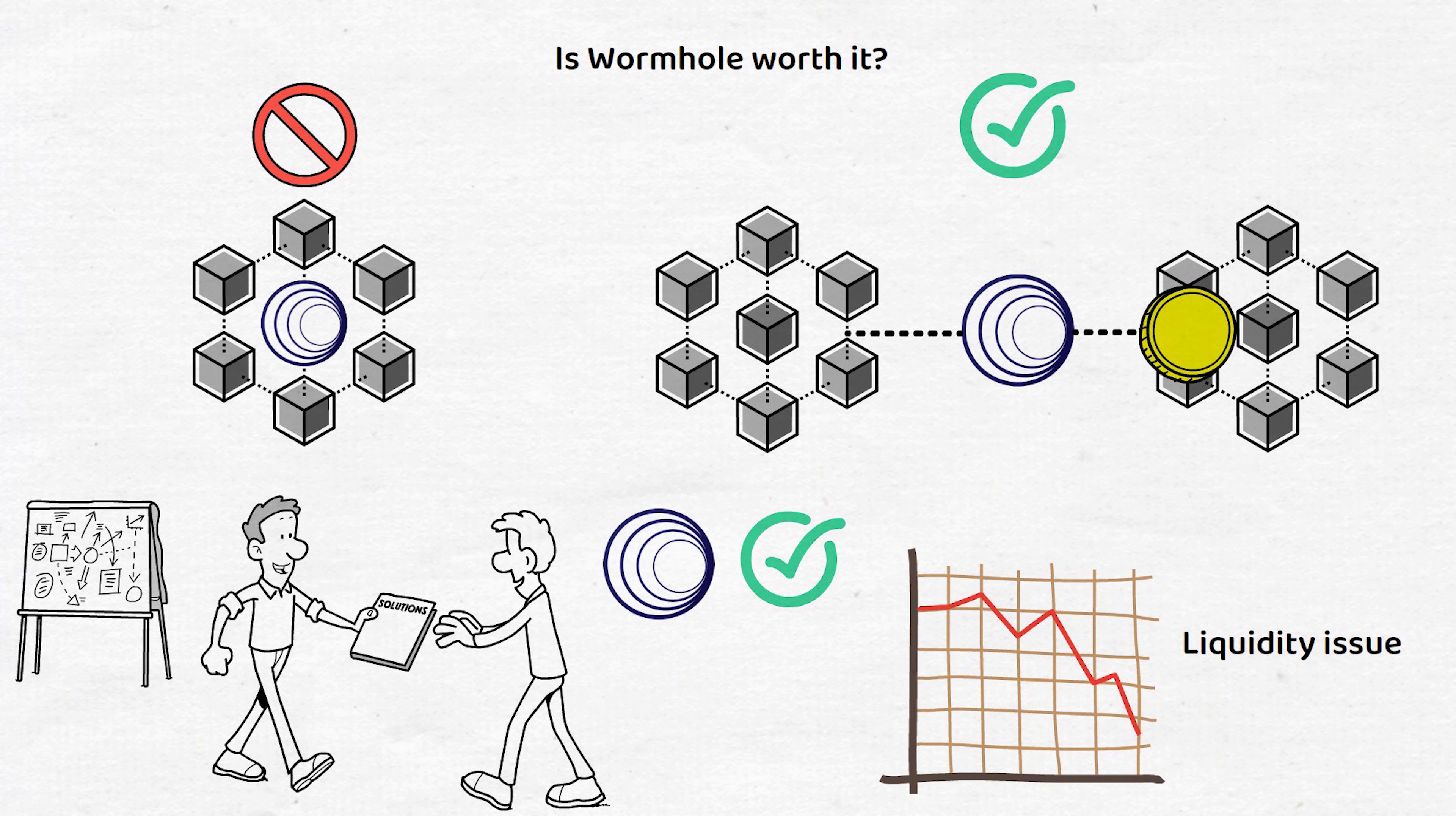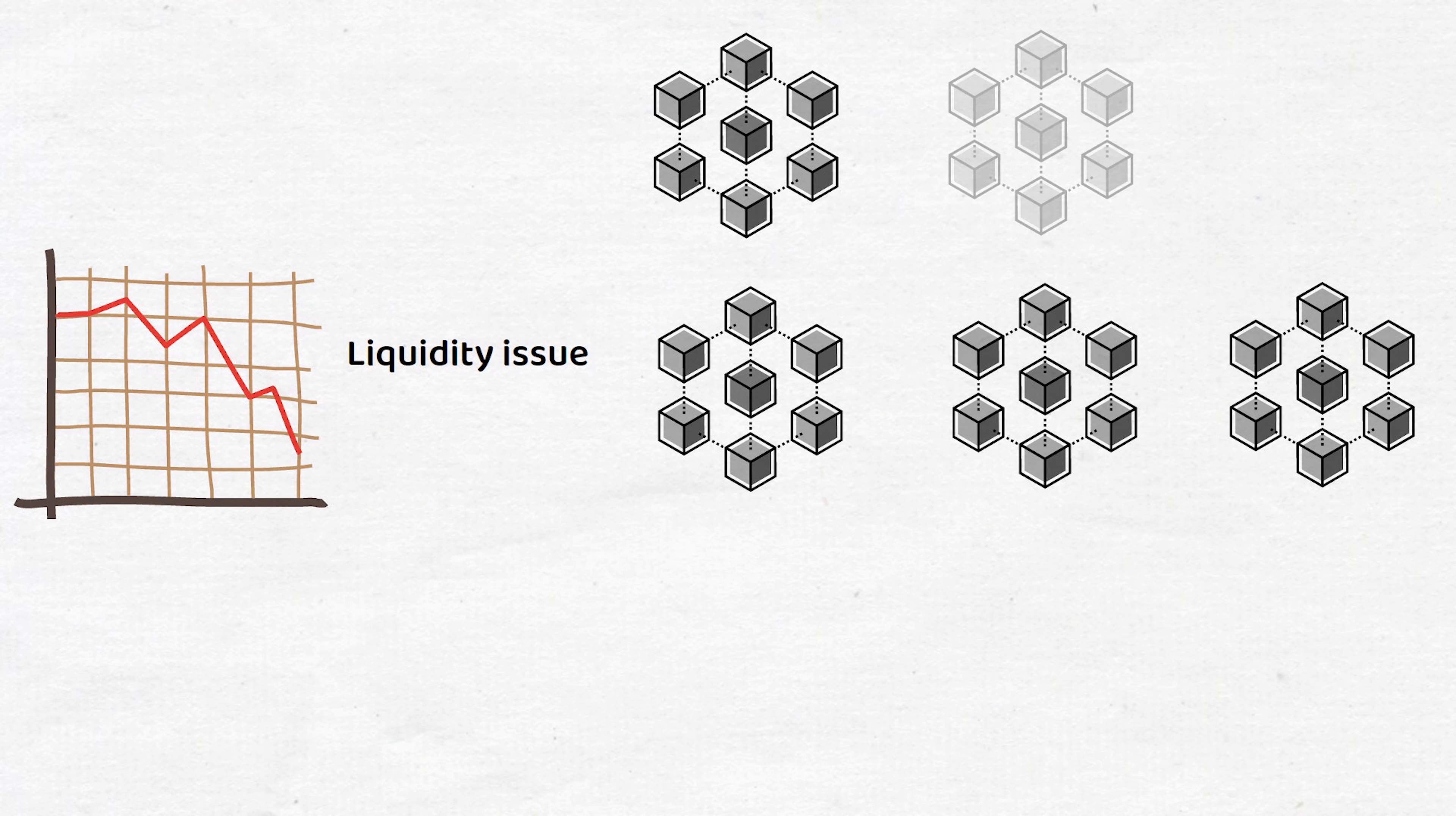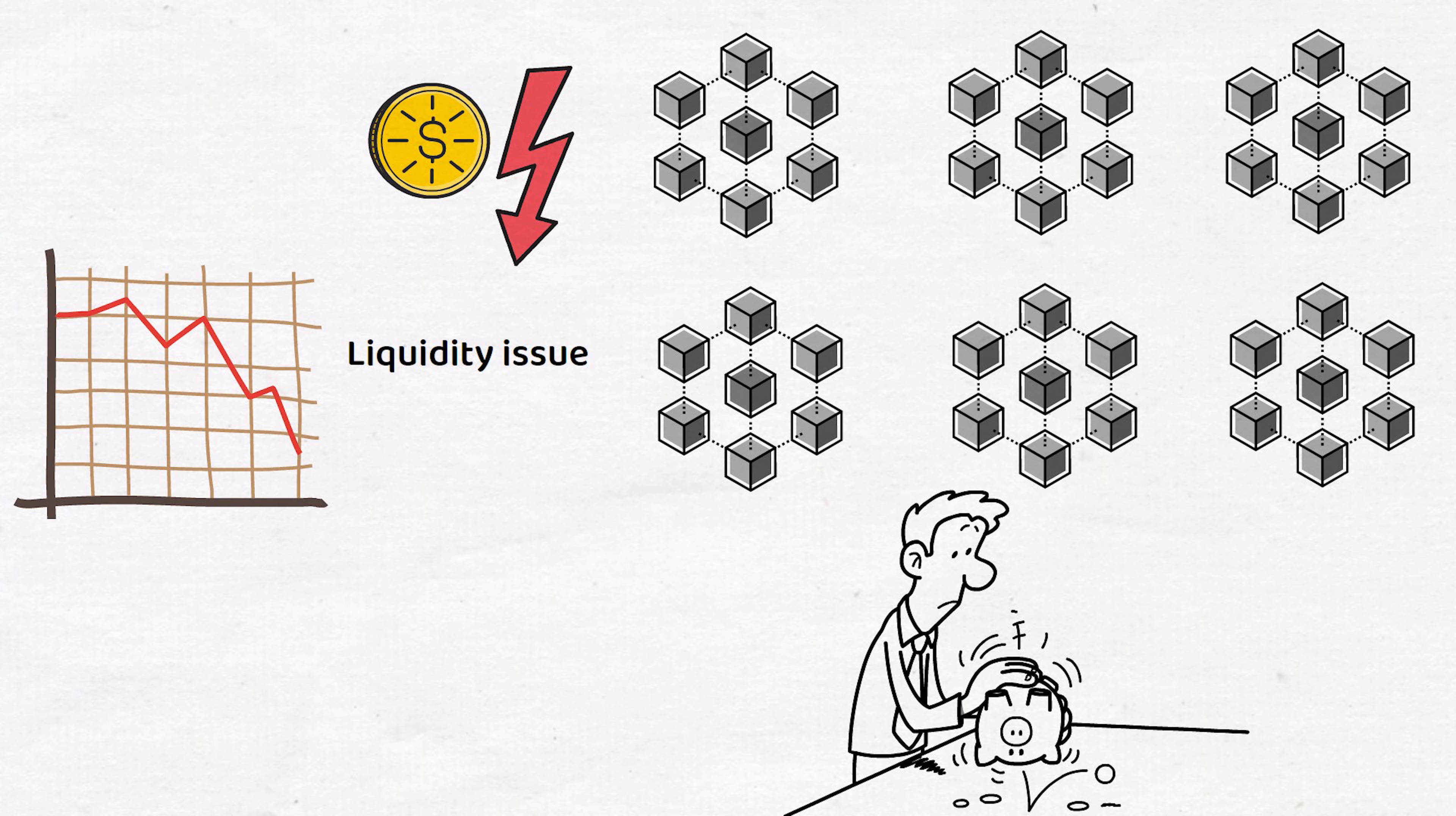This is because as blockchains get older and newer competitors appear, the money investors can invest into each chain individually decreases, which can result in a serious liquidity problem and result in users being unable to withdraw their investments at a fair exchange.